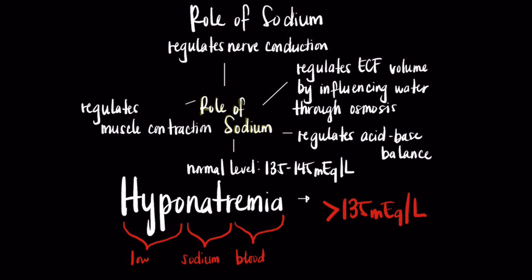Before we discuss hyponatremia, it's important to know the different roles that sodium plays in the body. Sodium is an electrolyte found in the ECF, or extracellular fluid, and the normal level is 135 to 145 milliequivalents per liter. In the body, sodium regulates ECF volume by influencing water through osmosis, regulates nerve conduction through action potentials, as well as regulating muscle contractions and acid-base balance.